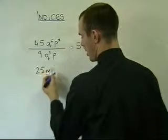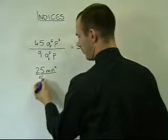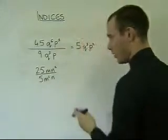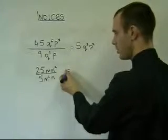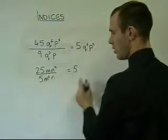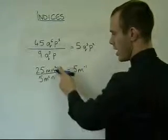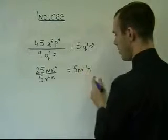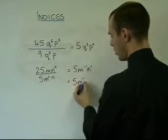25mn squared divided by 5m squared n. Careful here, because now we have a lower number on top than we did on the bottom. 25 divided by 5 first, which is 5. m to the 1 take away the 2 is going to be m to the minus 1. n to the 2 take away n to the 1 will be n to the 1, or just 5m to the minus 1n.